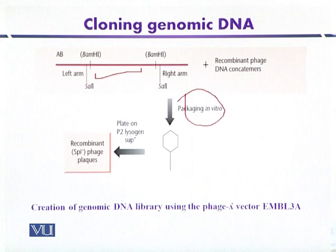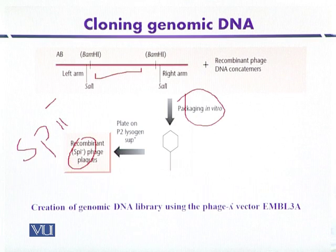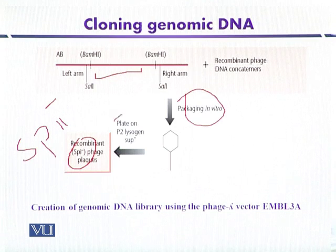In vitro packaging produces phage particles, and the recombinants are selected in the absence of SPI-negative strains. SPI-negative indicates that the red and gam regions are absent, so only phage particles containing recombinant DNA will be able to produce plaques on P2 lysogen, acting as a selectable marker.